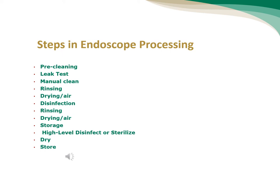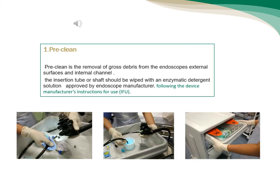Steps for processing flexible endoscopes: pre-cleaning, leak testing, manual cleaning, rinsing, air drying, disinfection, rinsing, air drying, and finally storage.